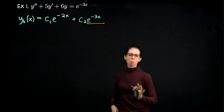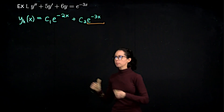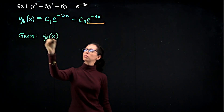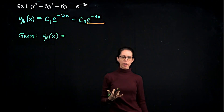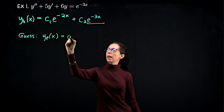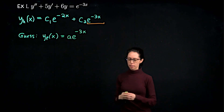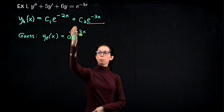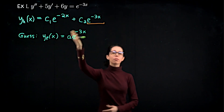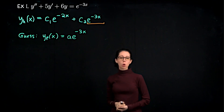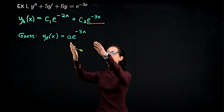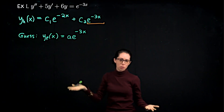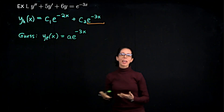Let me write down what you might initially think the particular solution should be — a generalized version of that right-hand side: a constant A times e^(−3x). The problem is that if I let c1 equal zero and c2 equal A, then this is actually one version of a homogeneous solution. If I plug this into the left-hand side, I'm going to get zero. Because there's a way to choose constants c1 and c2 to be exactly this expression, it solves the homogeneous problem, so it cannot solve the forcing.